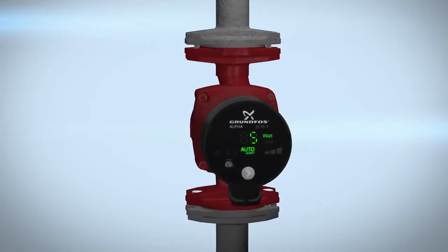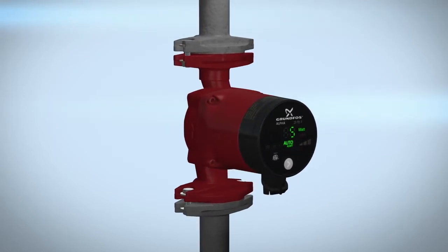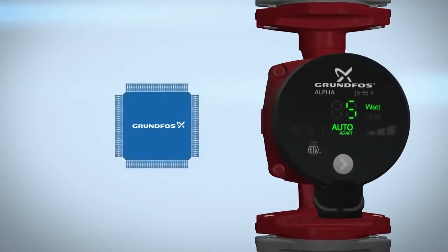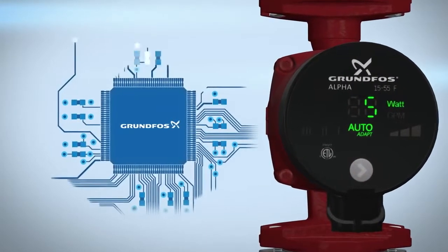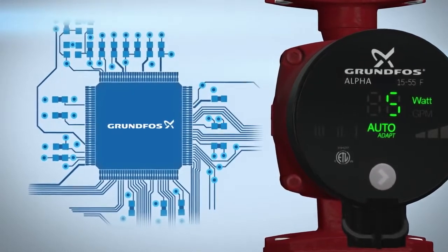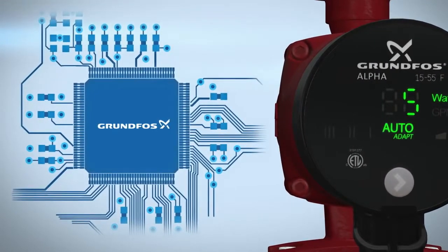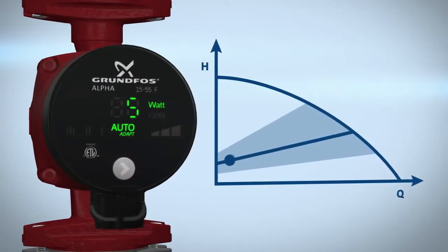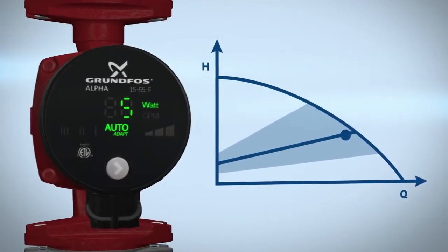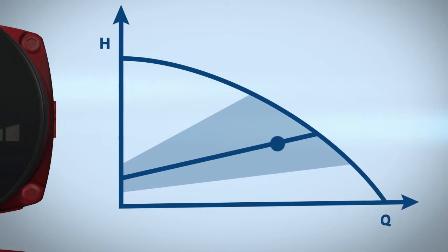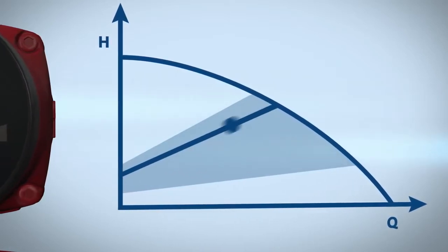Alpha uses an internal control processor to measure the change in system pressure, typically caused by opening or closing valves. This control functionality means AutoAdapt's set point is dynamic and is based on actual demand changes in the operating system.